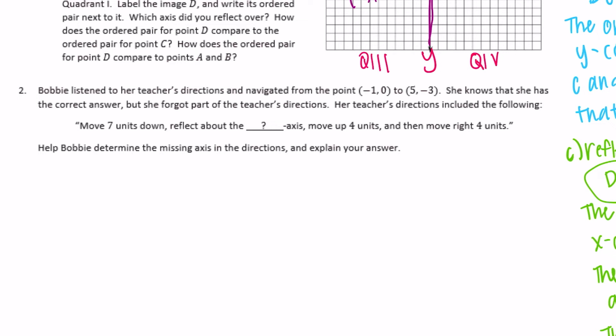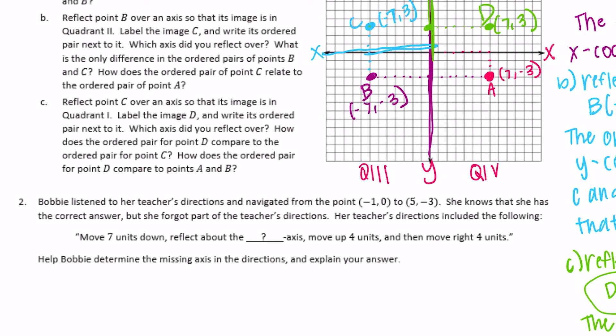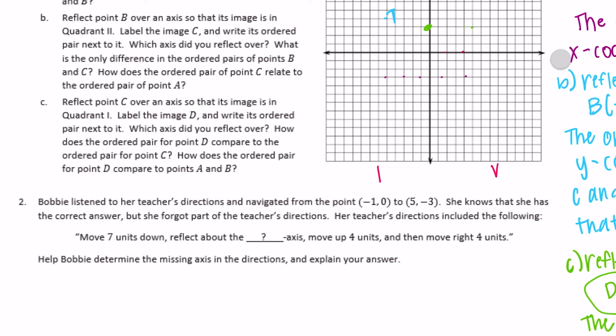Problem 2: Bobbi listened to her teacher's directions and navigated from the point (-1, 0) to (5, -3). She knows she has the correct answer, but forgot part of the directions. Starting at (-1, 0) — right here on the coordinate plane — she moved to (5, -3): five units right and three units down.